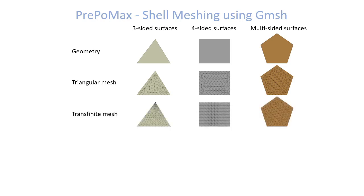The next thing we can do is a so-called transfinite mesh. Transfinite mesh results in a regular mesh when using three-sided and four-sided surfaces. You can see that the triangles are aligned, they are the same shape, and their structure is regular.